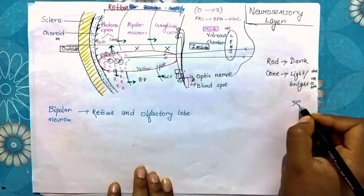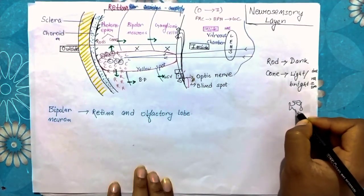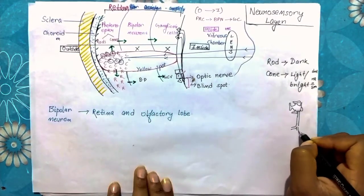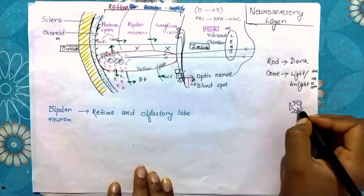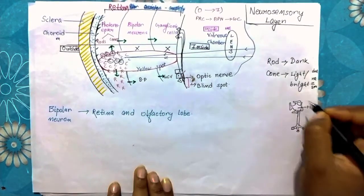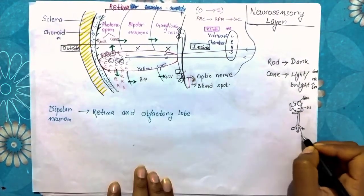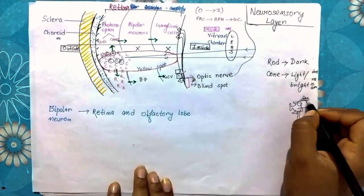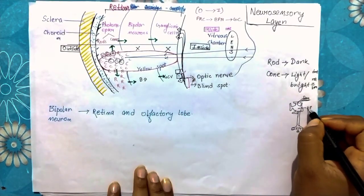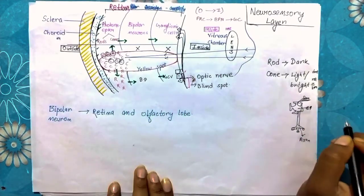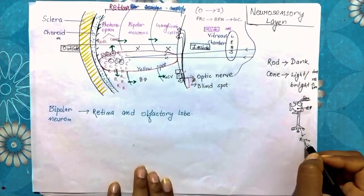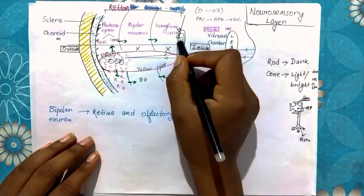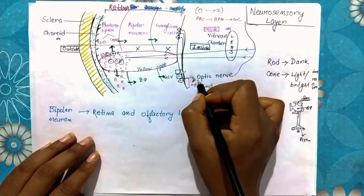The neuron structure has dendrites, the cell body, and the axon. The cell body receives signals and the axons transmit them to other neurons. The axons of ganglionic cells form the optic nerve.